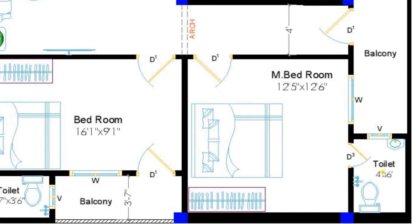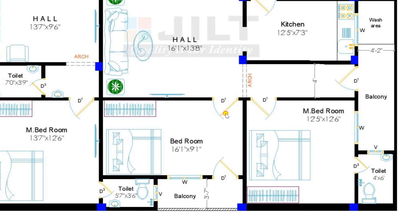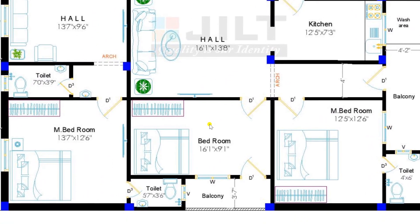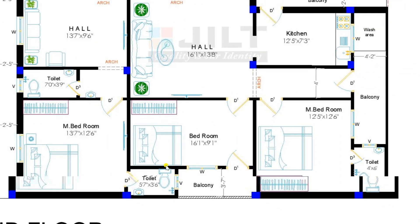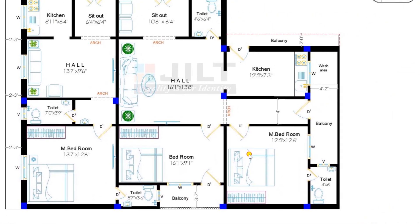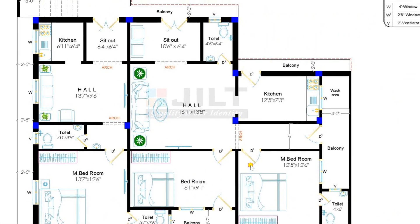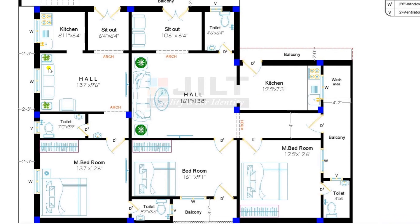The master bedroom is attached with a toilet of 4 feet by 6 feet. Entering another bedroom of the second floor plan, it has a dimension of 16 feet 1 inch by 9 feet 1 inch, also provided with one door towards the balcony. This is a very comfortable plan for the second floor as well. Two portions are designed — one 1 BHK and another portion is 2 BHK.